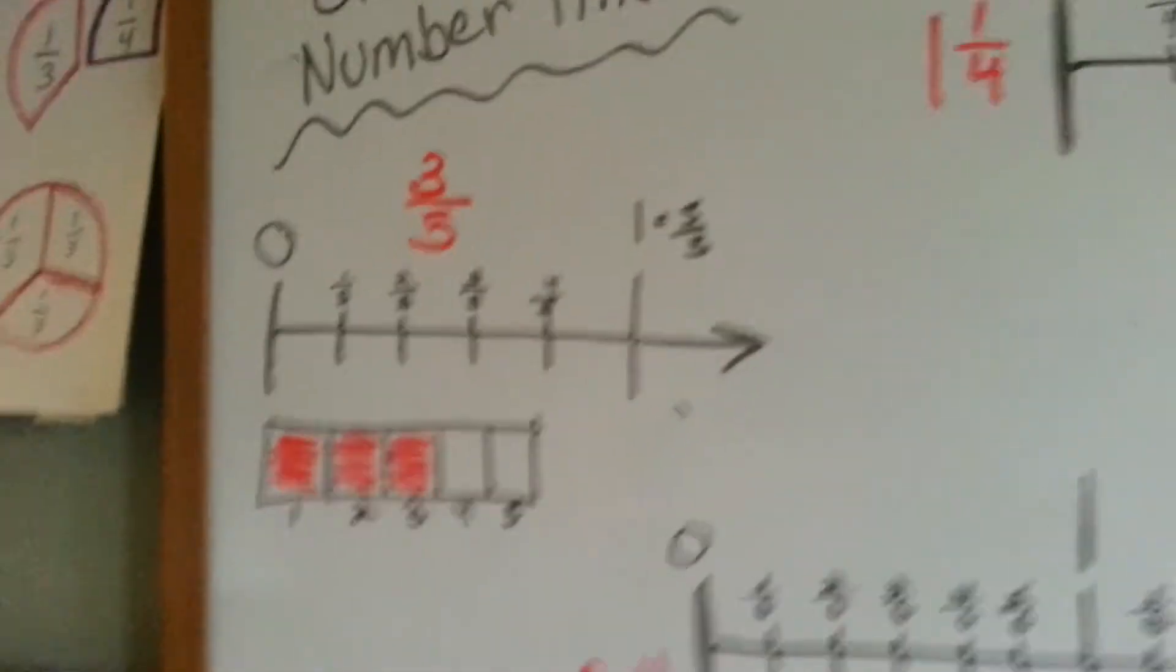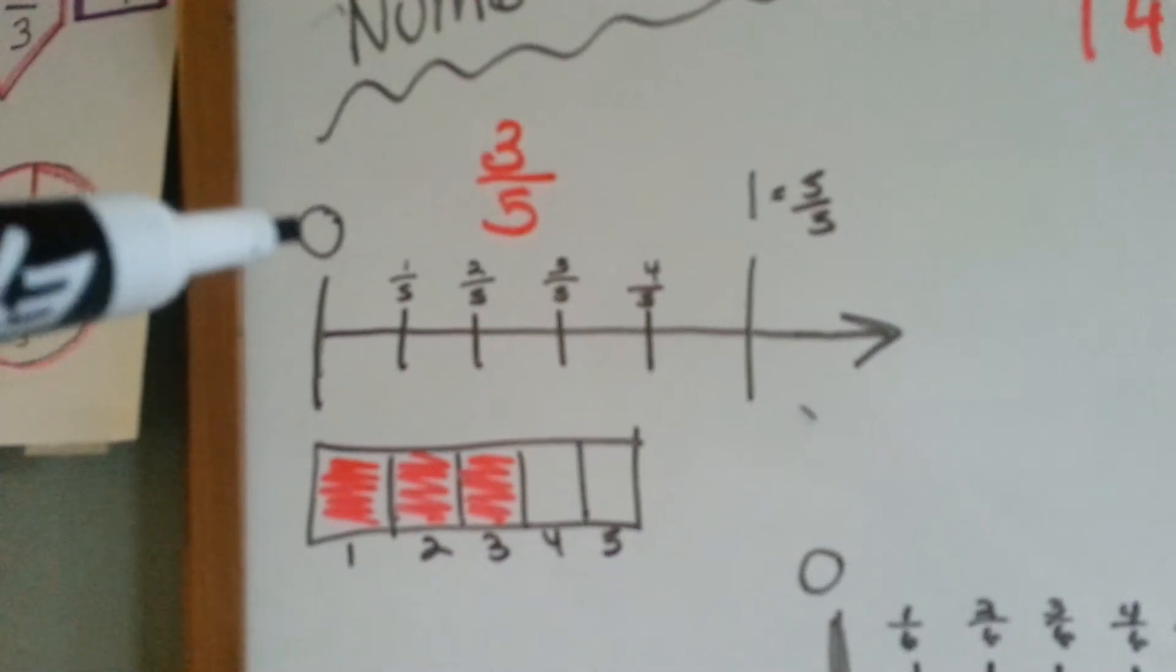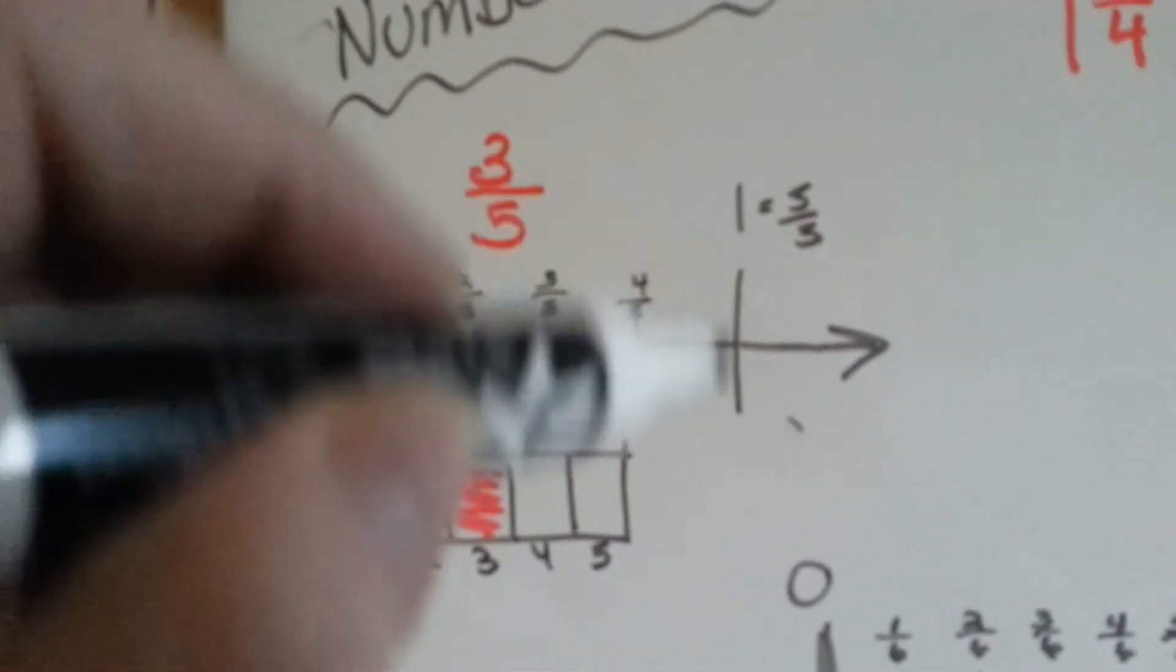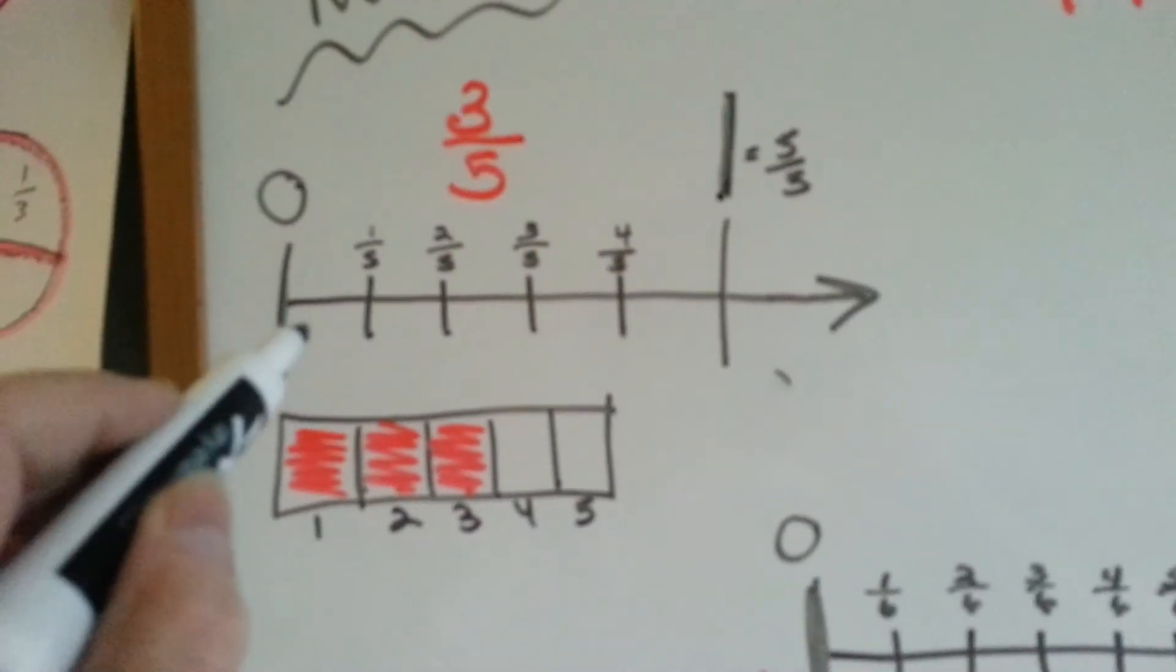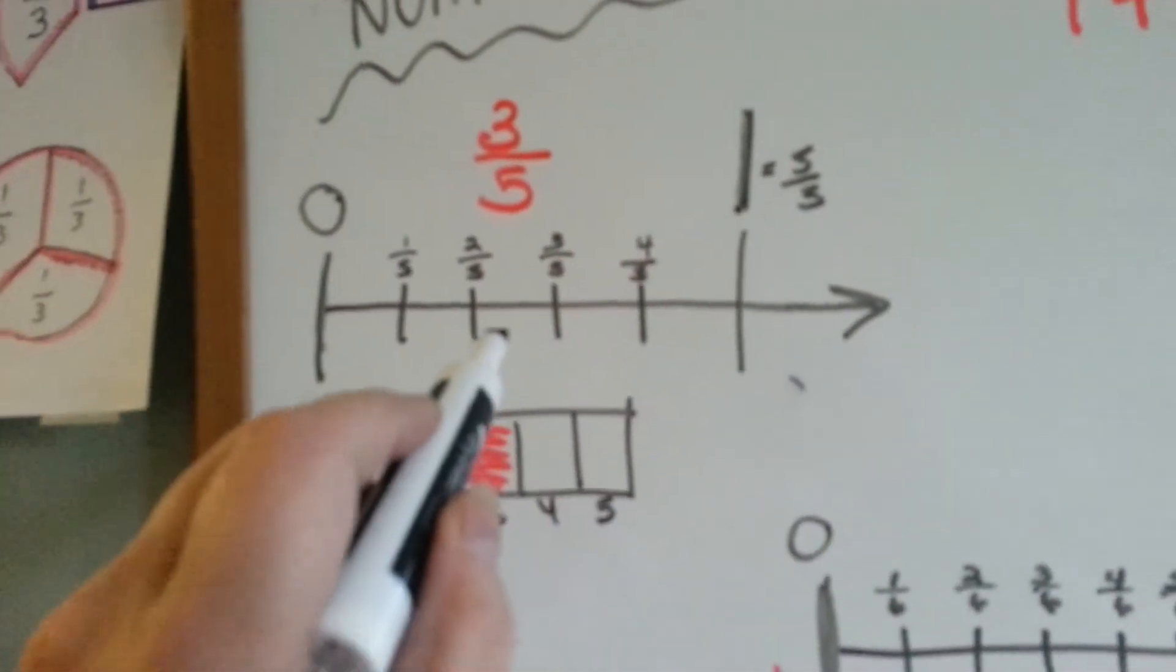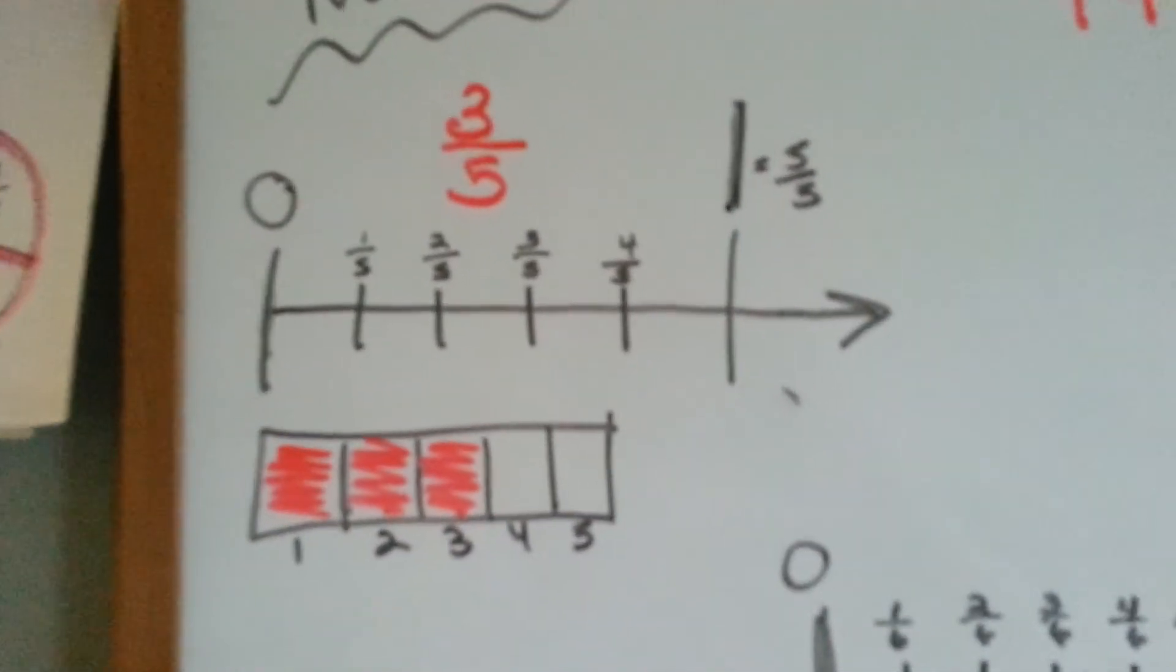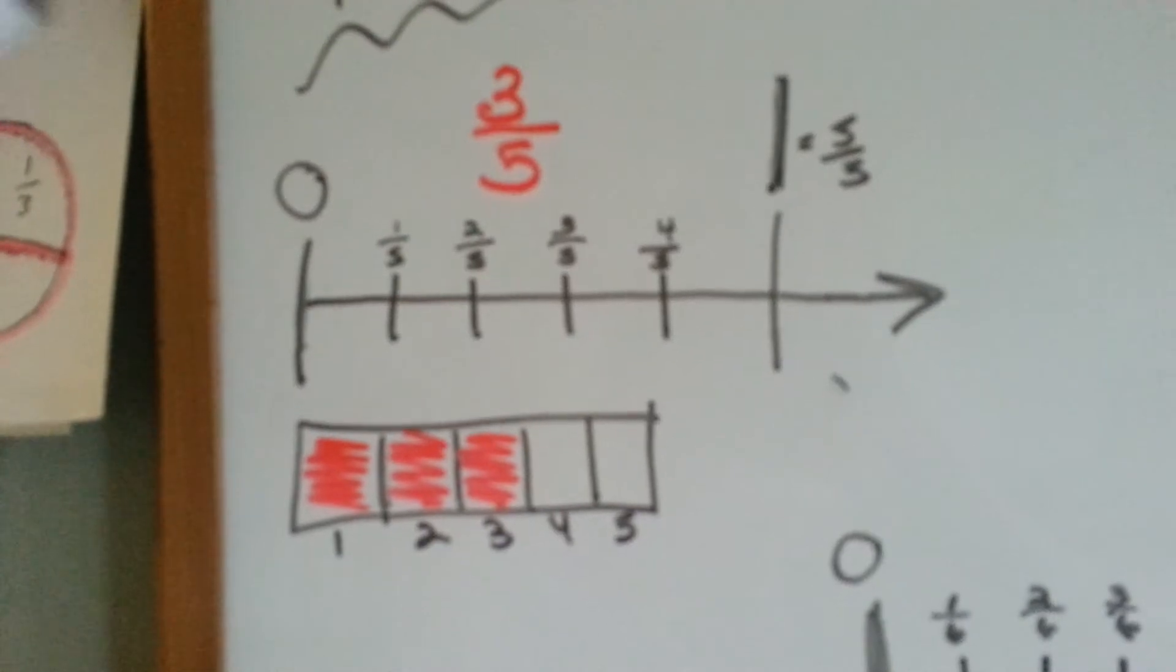So, let's look at our tiny little number line first. We have zero here and one is here. That's one. It's split into little fifths. So, you can see the five is the denominator. Let's get my focus here. Sorry, the focus isn't that great.